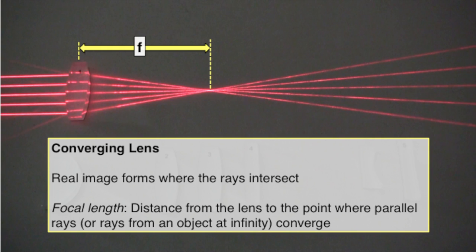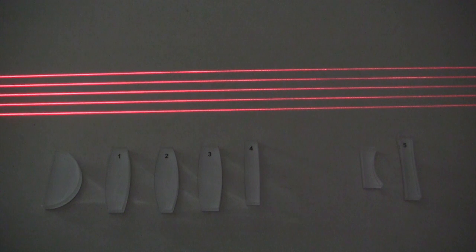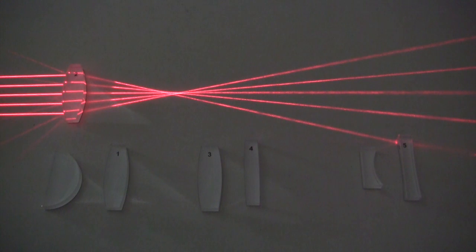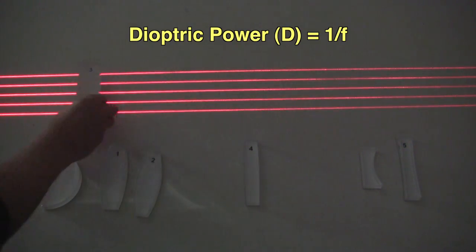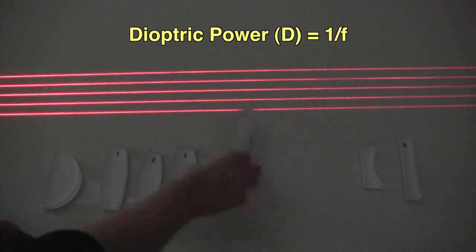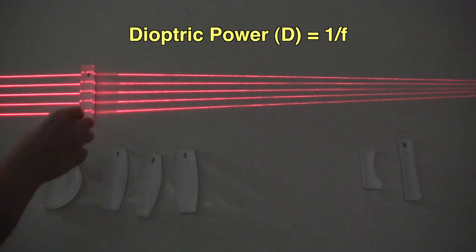The focal length is the distance from the lens to this real image and is positive for converging lenses. Lenses of different shapes will have different focal lengths. Stronger lenses have shorter focal lengths. The power of a lens is measured in diopters and is equal to 1 over the focal length.